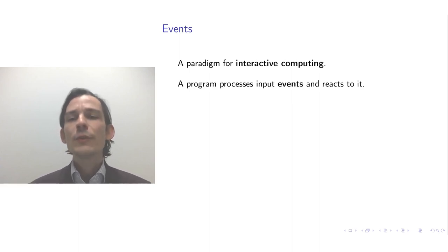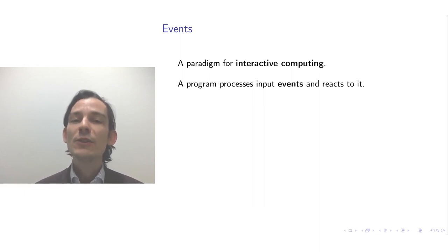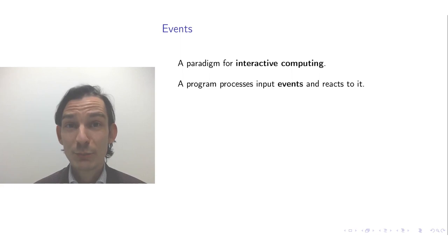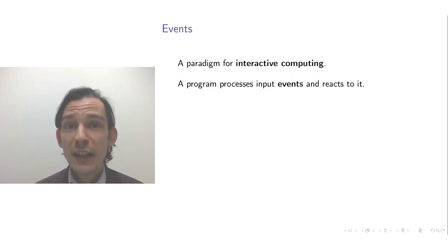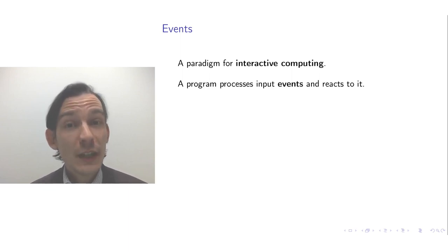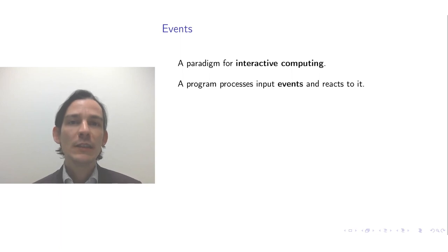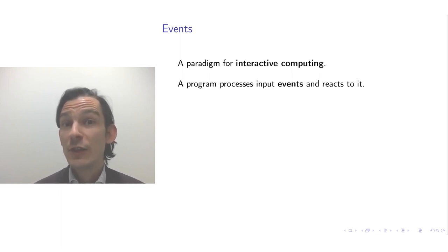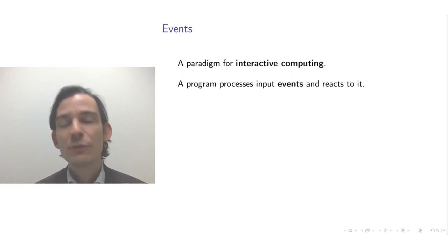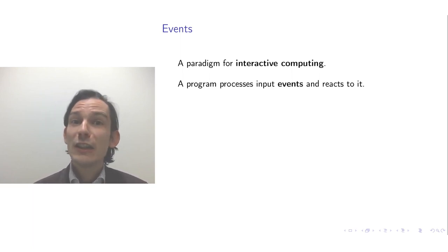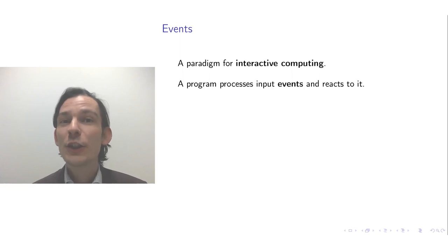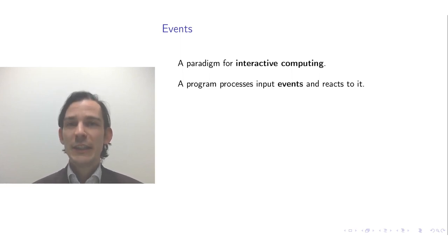What the interactive computing system does is it takes as input a continuous stream of input events, processes them, and as a result generates a continuous stream of output events. A program is a process that takes input events, reacts to those input events, potentially generating state changes — its internal state is modified — or it generates output events that some underlying operating system can use to change the state of the screen by changing pixel colors or changing the state of some audio device.